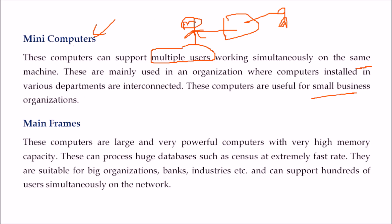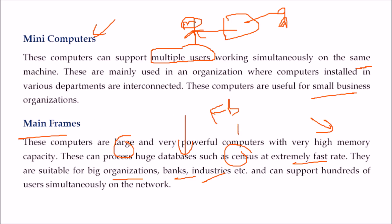Then mainframes. These computers are very large, powerful computers with very high memory capacity. They can process huge databases, like the census, at an extremely fast rate. For big organizations such as banks and industries, they support hundreds of users. Social media platforms like Facebook, Twitter, and Instagram also rely on mainframes.